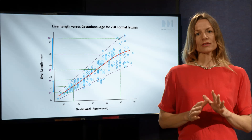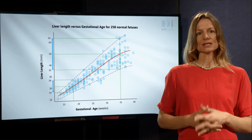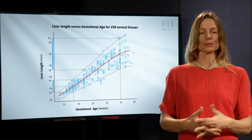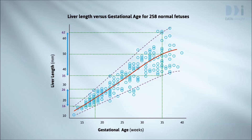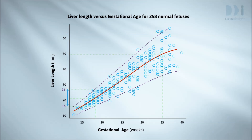We can think of the trend here as a sort of summary of the strongest pattern in the data. Where there is a lot of scatter about the trend, we need to predict our outcome using a wide bracket of values. Where the scatter is small, our range of predicted values will be much narrower and probably more useful.